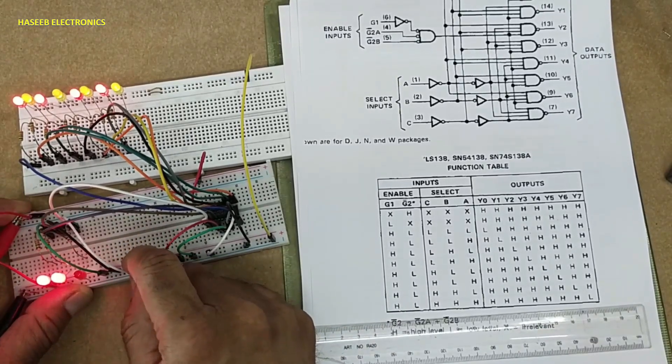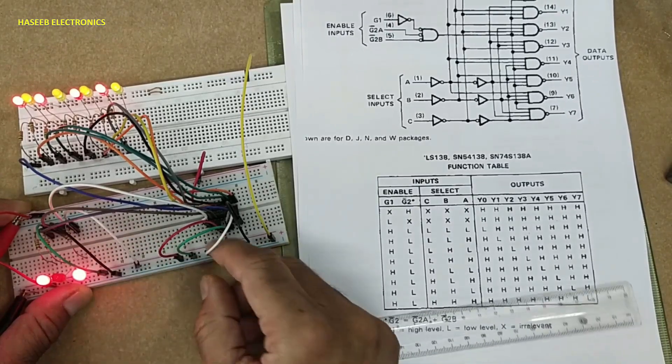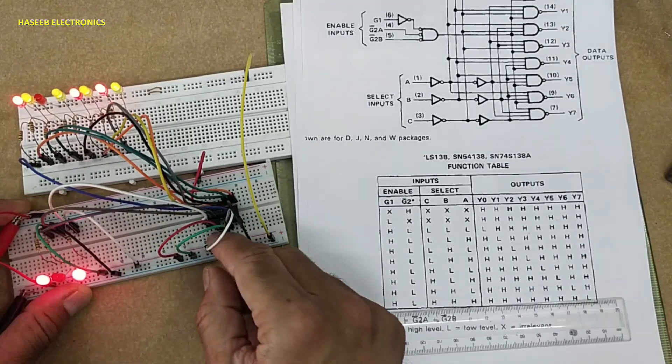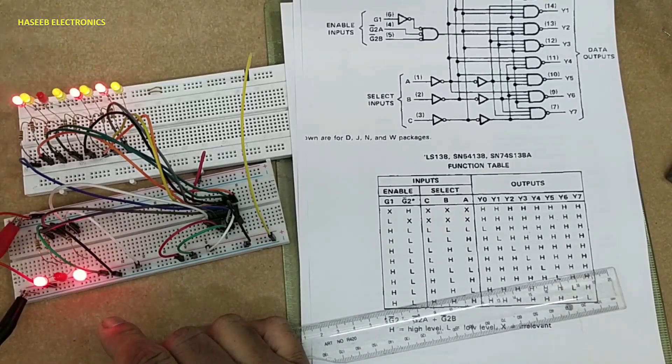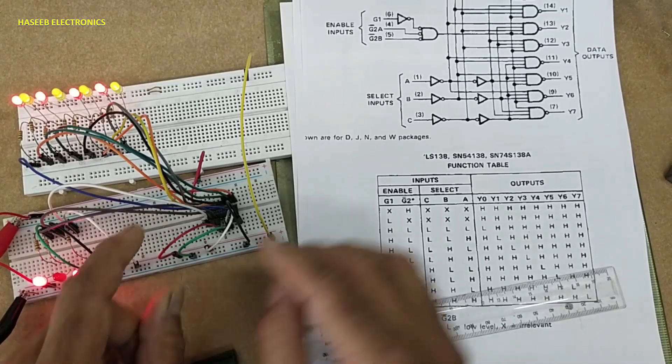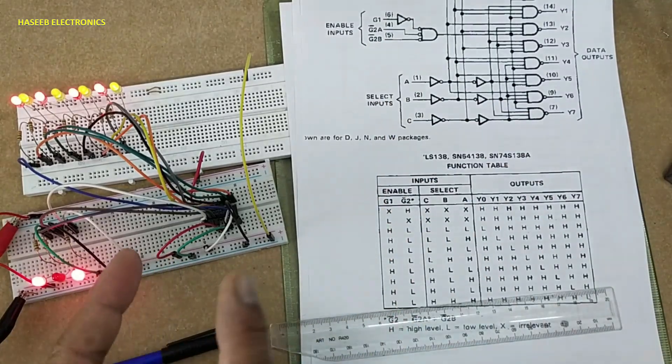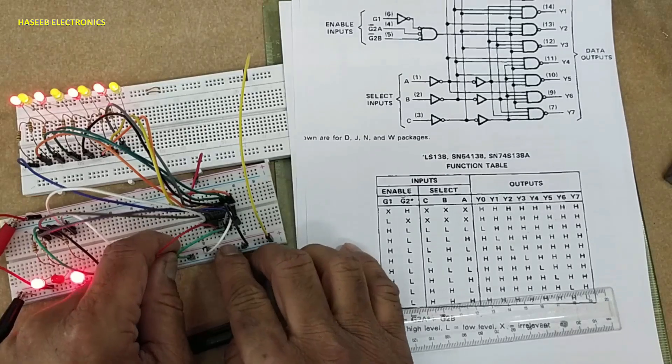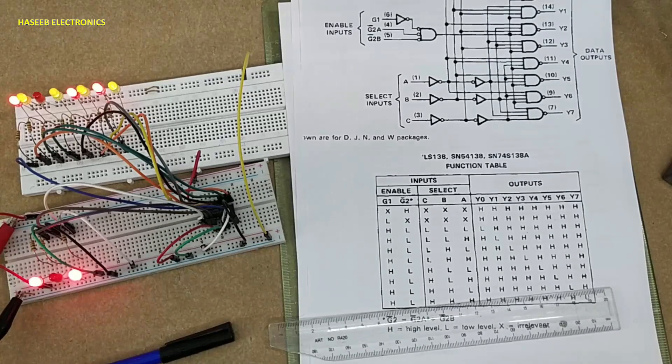So pin number six must be high so that this IC will provide outputs. If G2 bar—anyone, G2 bar 2A or G2 bar 2B—is set to high, this IC will stop functioning. If you have any questions, please write in the comments.